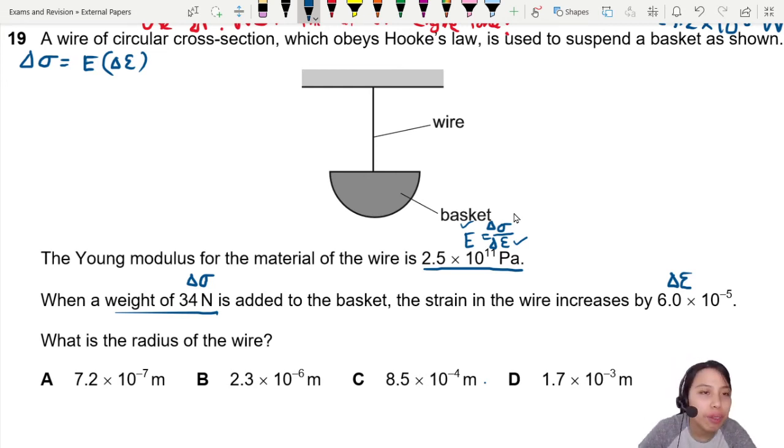2.5×10^11 pascals. Strain increase is 6×10^-5. This will give us a big value of 1.5×10^7. That's just the stress.